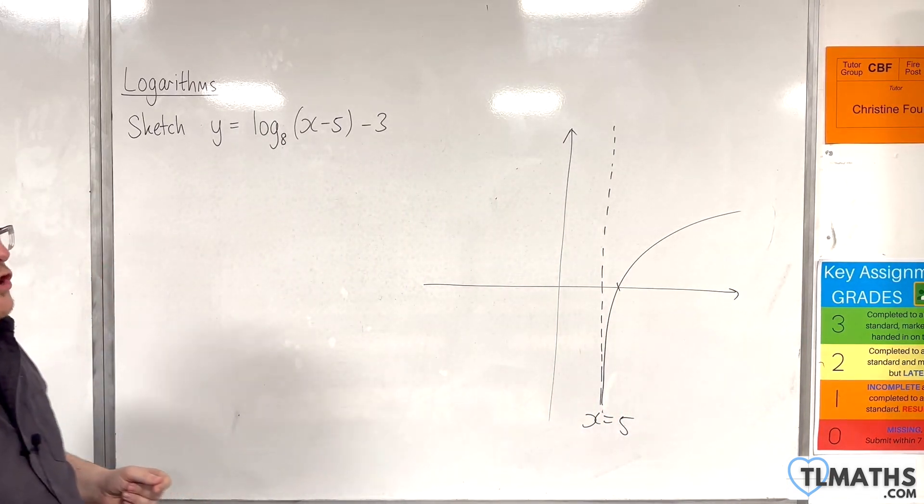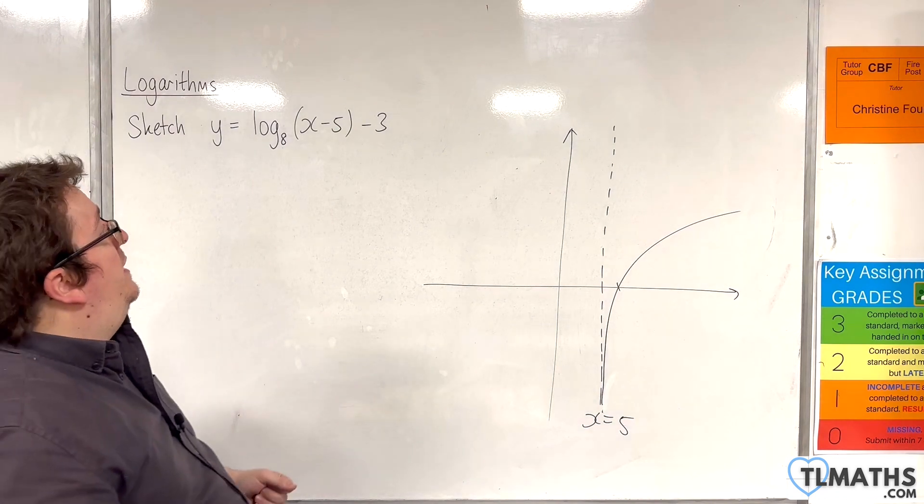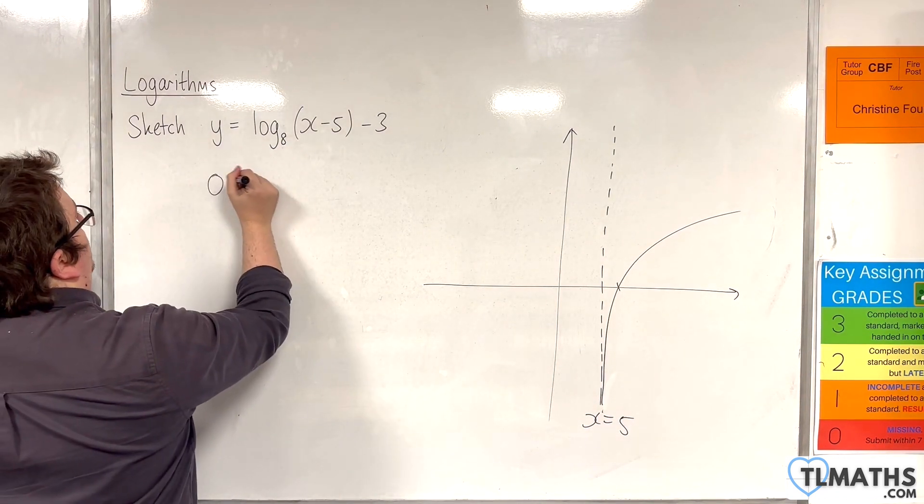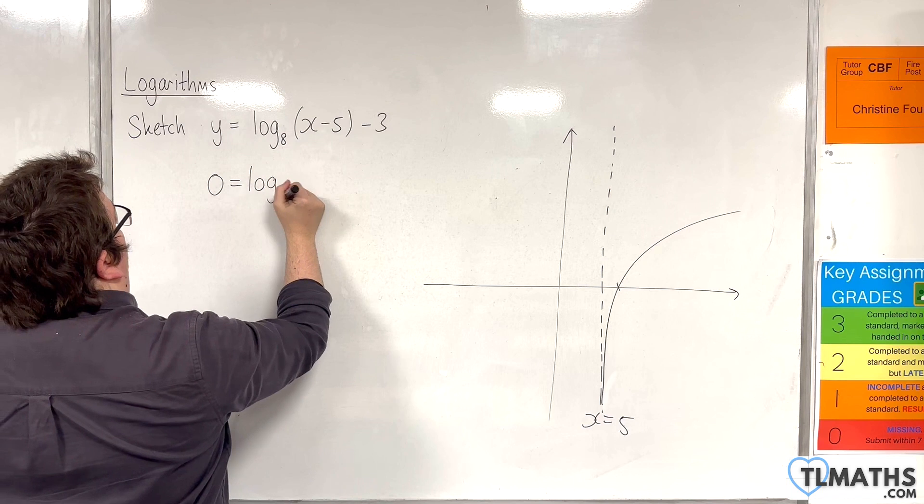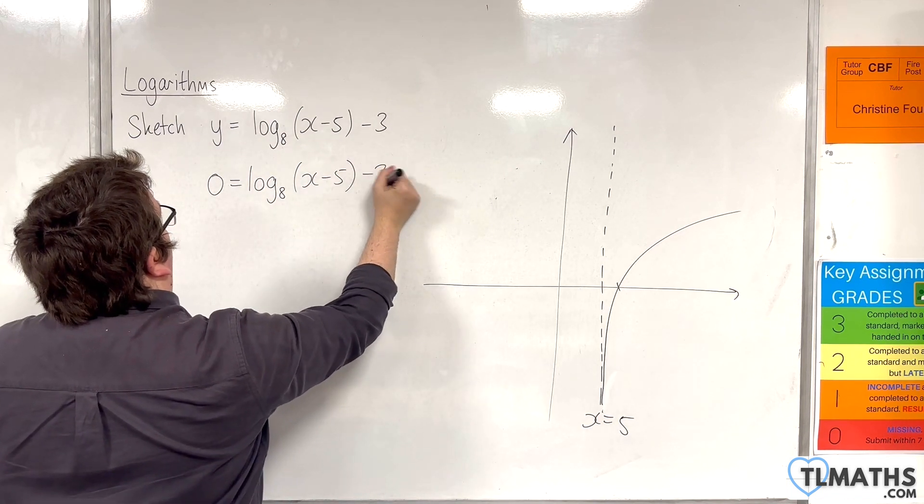So there's one point of intersection with the x-axis that we're interested in, and that's when y is 0. So 0 is log base 8 of x take away 5, take away 3.